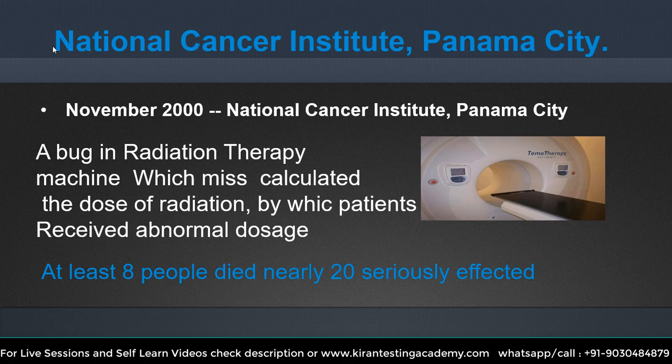Next, we can see the National Cancer Institute in Panama City. It's a radiation therapy machine — an automated system. Normally, when we feed a certain dosage, patients receiving treatment should receive that exact amount. But there was a problem in the calculation or programming part, causing it to miscalculate the dosage. As a result, patients received an abnormal dosage — 8 people died and 20 were seriously affected. Again, the problem was software-related.